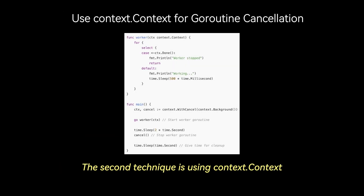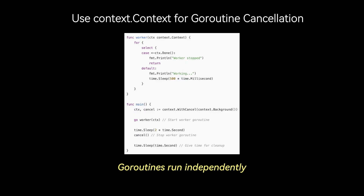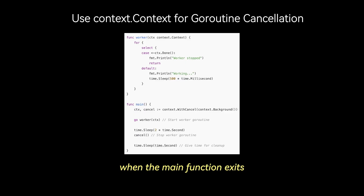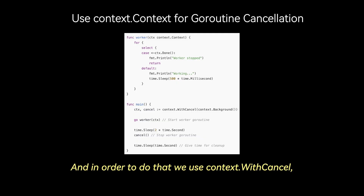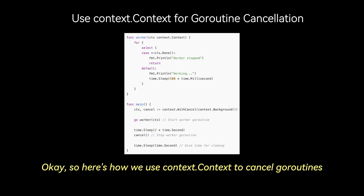The second technique is using context.Context for goroutine cancellation. Goroutines run independently and don't automatically stop when the main function exits, but we want to allow controlled shutdown. To do that, we use context.WithCancel, which provides a way to signal goroutines to exit.